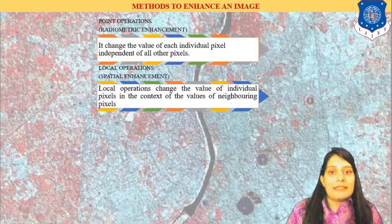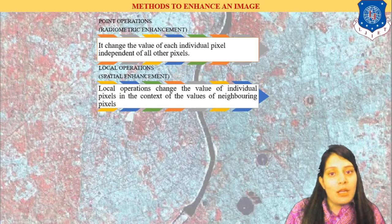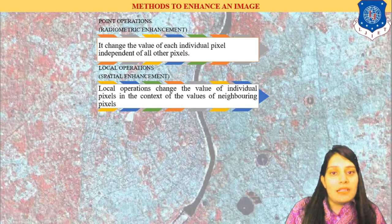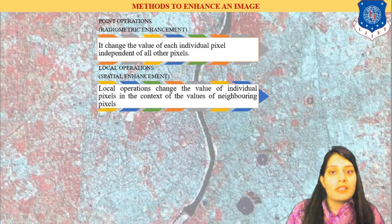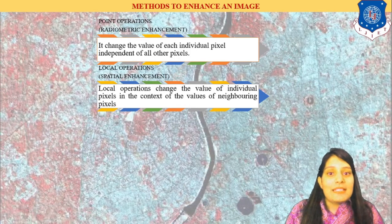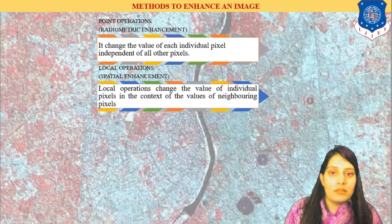There are two types of method to enhance the image: point method and local method. The point method is known as radiometric enhancement, and the local method is also known as partial enhancement. In the point method we do pixel intensity value changes to the individual pixel only. In spatial filtering — local operations applied on the image — enhancement is done on the basis of neighborhood pixel analysis. This is known as point operation and local operation.